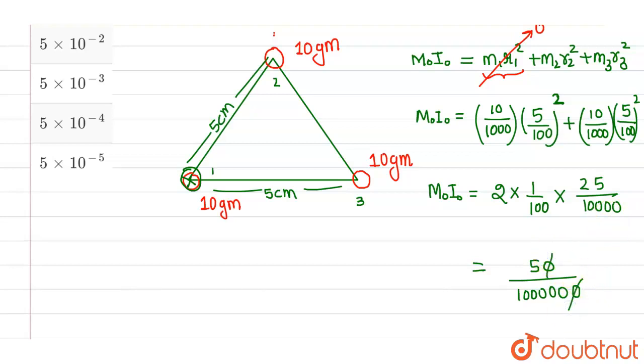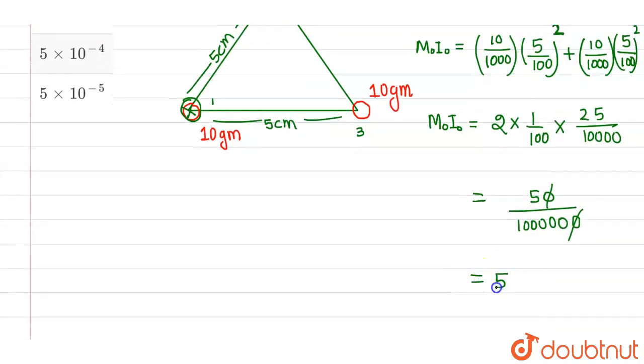So this 10 will cancel out with this 10. So overall, I will be getting 5 × 10⁻⁵ kg m² as the moment of inertia for this particular system.